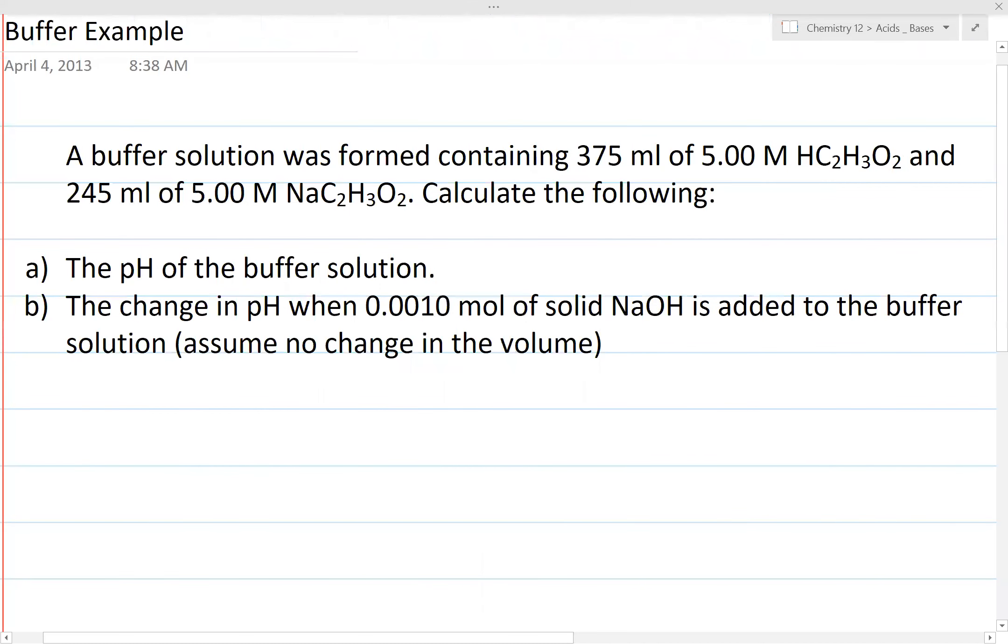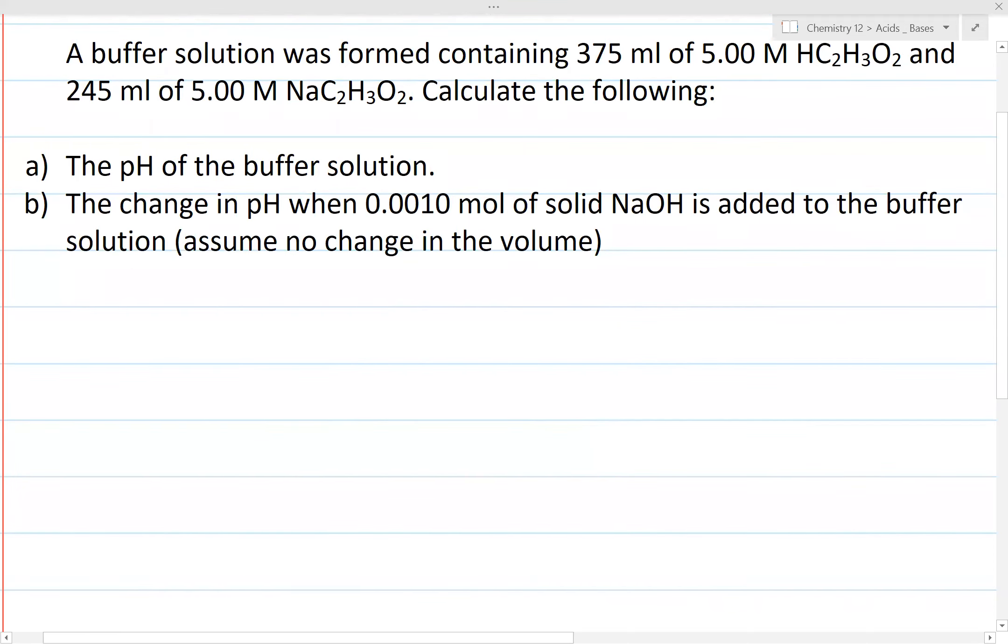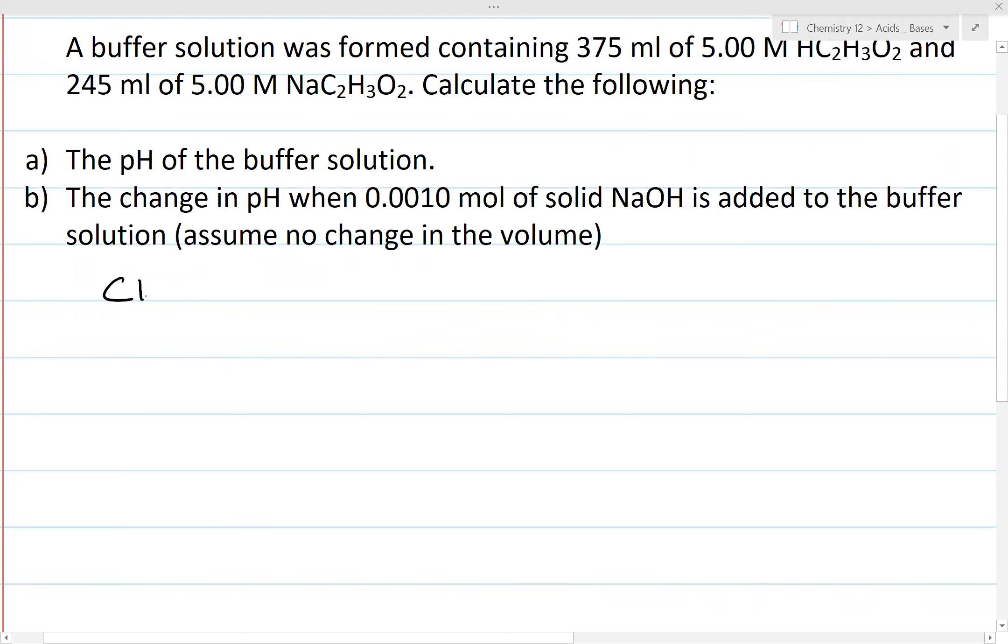Now, another one would be an example of a typical question that you would be seeing. So it says a buffer solution is formed containing 375 mL of 5 molarity acetic acid and 245 mL of 5 molar sodium acetate. So let's calculate the pH of a buffer solution. Now, so what you want to do, first of all, is you have CH3COOH plus water.